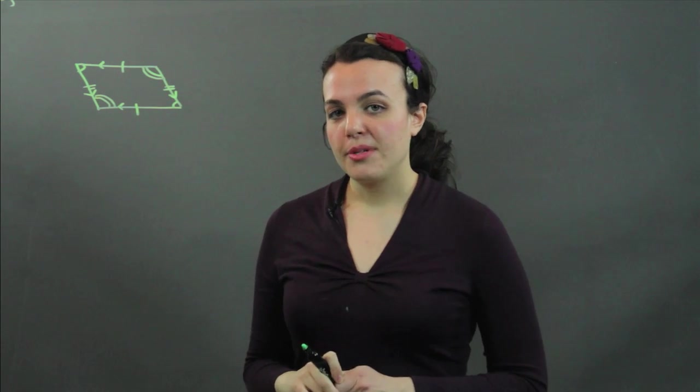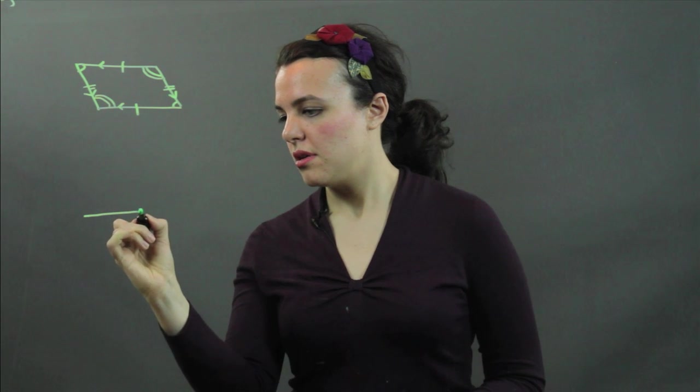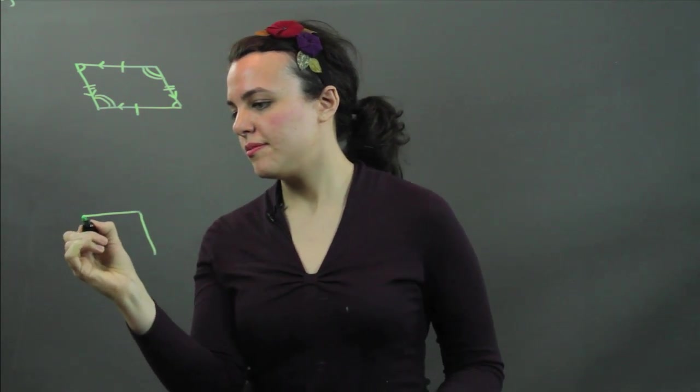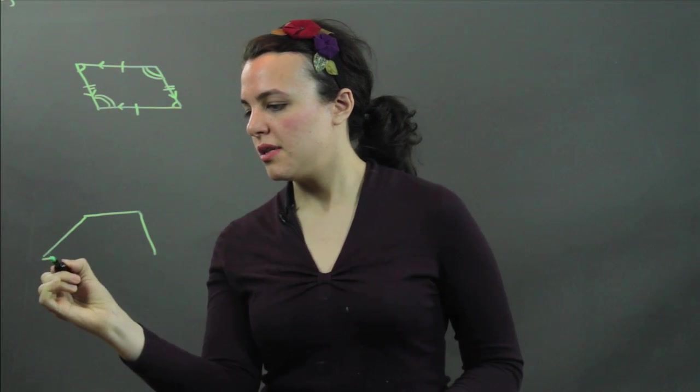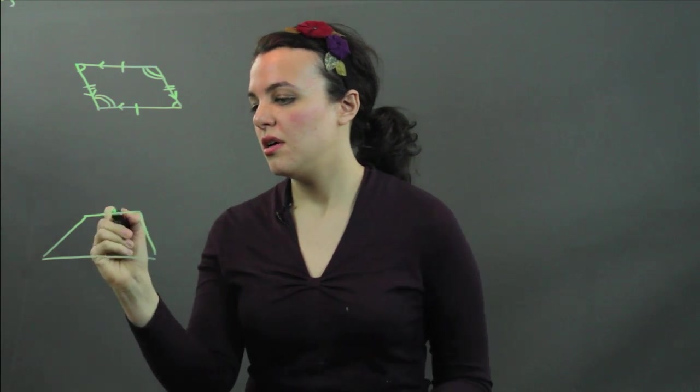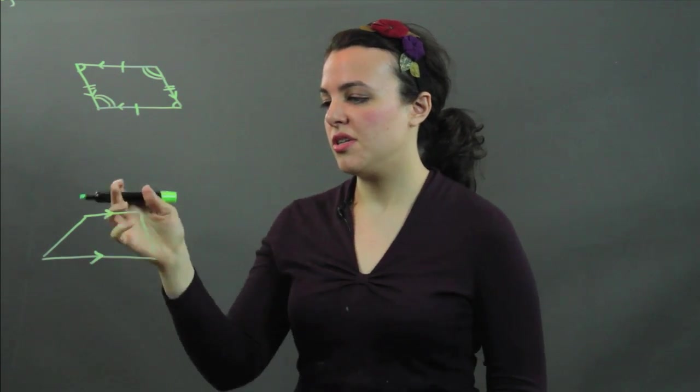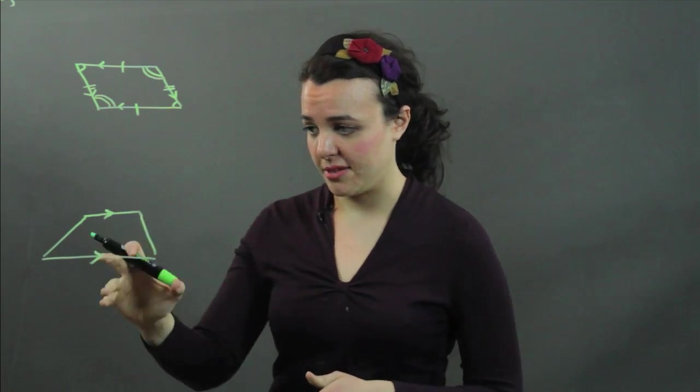Now the trapezoid is a little different. A trapezoid does not need any congruent sides or angles. It just needs one pair of parallel sides known as the bases. These are the bases.